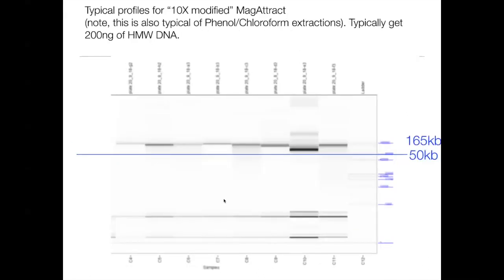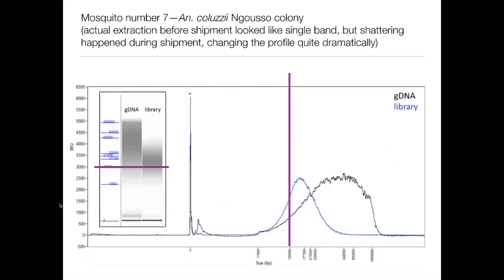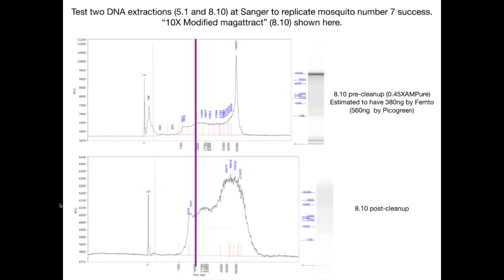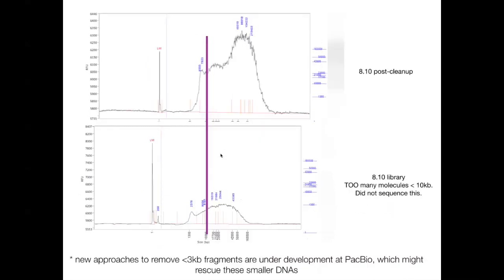Earlier this year we published a paper on a single mosquito assembly using the PacBio low input approach. The DNA we extracted at Sanger was shipped over to PacBio using the 10X modified version of the kit. But by the time it got to PacBio in California, the molecules had broken during shipment. The resulting library showed the majority of molecules are larger than 10 KB, which is a good thing. We've also tried doing extractions and library preps here at Sanger using the low input approach.